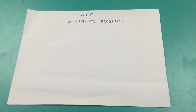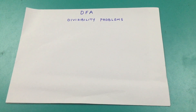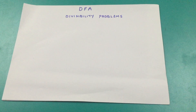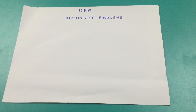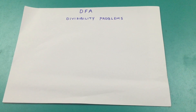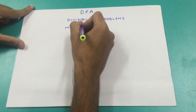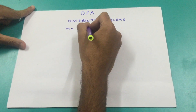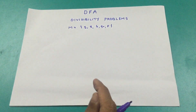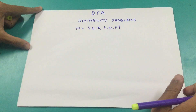Hey guys, so today we're going to continue with our DFA series. Today I'm going to be teaching you the divisibility problems — how do we tackle divisibility problems using deterministic finite automata. I'm going to teach you a method which is really effective and really easy. As we know, our mathematical model is m = (Q, Σ, δ, q0, F), so I need to fill all these up. Now what is the logic I'm going to use? Let me take an example.